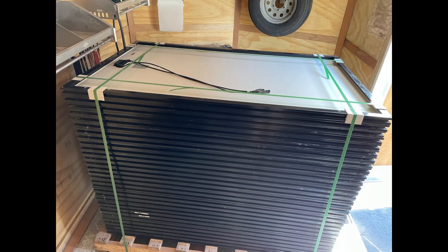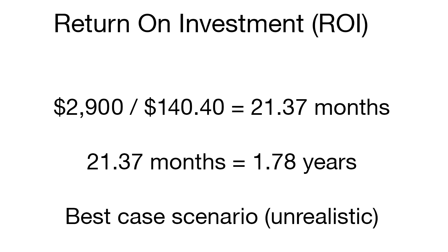Let's wrap up with return on investment. From the first video, I spent about $2,900 total on this system. With best-case scenario I'd be getting about $140 back per month from my electric provider, which puts me at a return on investment of 21.37 months or 1.78 years. I don't consider that realistic — I'd be very excited to see ROI within three years, which from everything I've studied is outstanding for a solar system. If you have a higher electric rate than my 13 cents per kilowatt hour, you could do even better.